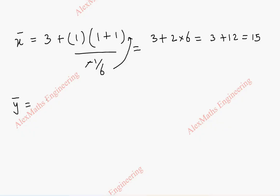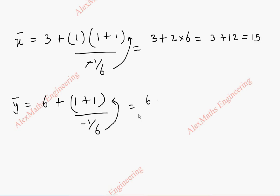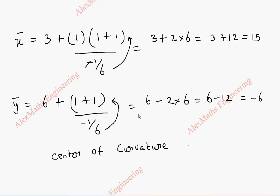Similarly, ȳ = y + (1 + (dy/dx)²) / (d²y/dx²) = 6 + (1 + 1) / (−1/6) = 6 + 2 × (−6) = 6 − 12 = −6. So the center of curvature (x̄, ȳ) is (15, −6).